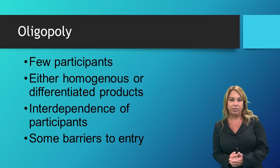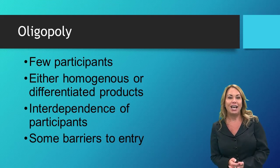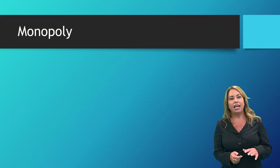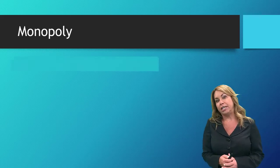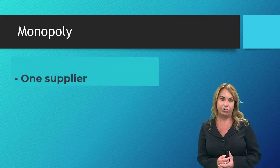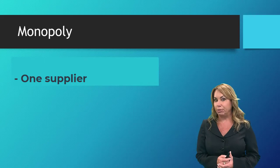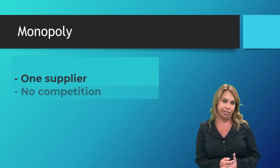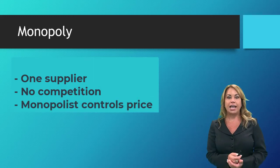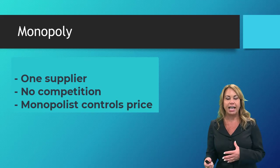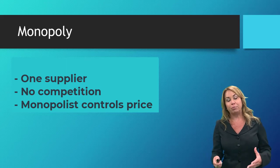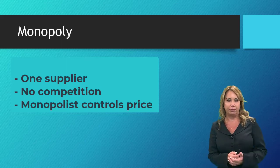The last form of competition we're going to discuss is a monopoly. In a monopoly we typically have only one supplier in the industry, which can present problems because they have no competition — so the monopolist controls the price. Oftentimes that's where governments will intervene to some degree to make sure that the monopoly is fairly priced and that the industry is following fair pricing practices.